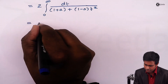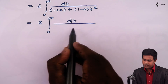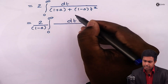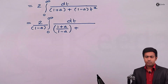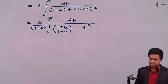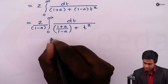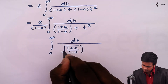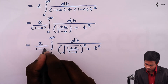To evaluate this integral, we multiply and divide the denominator by (1 − a). We get 2 times the integral from 0 to ∞ of dt, with (1 − a) factored outside the bracket. Dividing through, the denominator becomes (1 + a)/(1 − a) + t², since (1 − a) cancels with the second term.